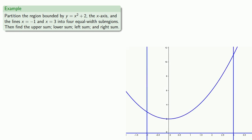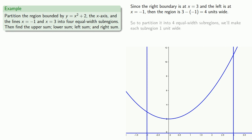Since we want to partition this region into four equal-width sub-regions, we might want to figure out how wide those individual sub-regions are going to be. The right boundary is at x equals 3, and the left boundary is at x equals negative 1. So the entire region is 3 minus negative 1, 4 units wide. And so to partition it into 4 equal-width sub-regions, each sub-region needs to be 1 unit wide.